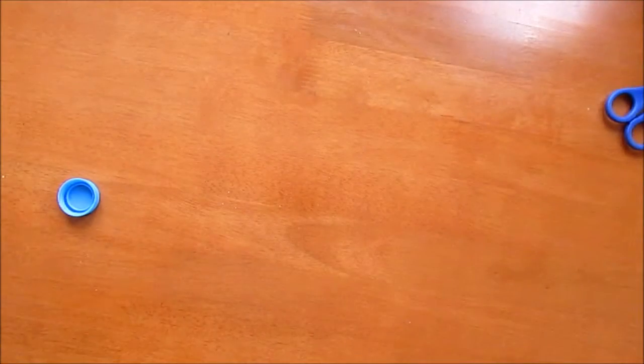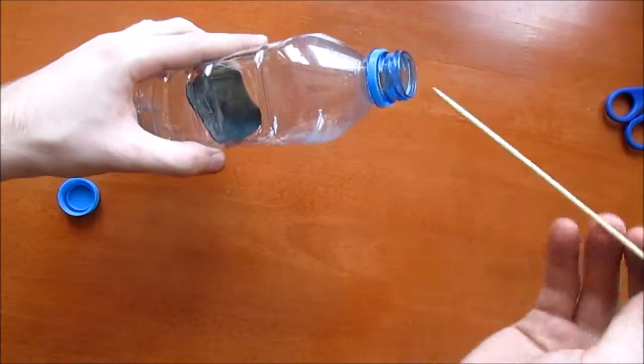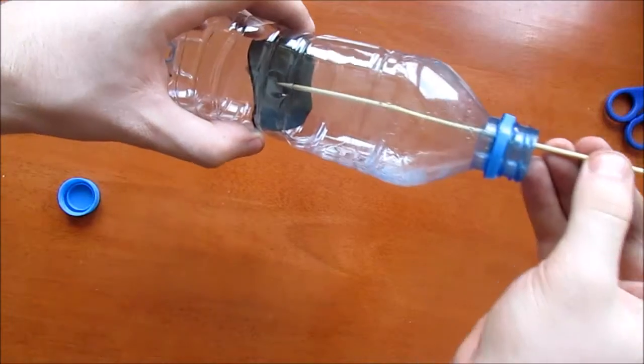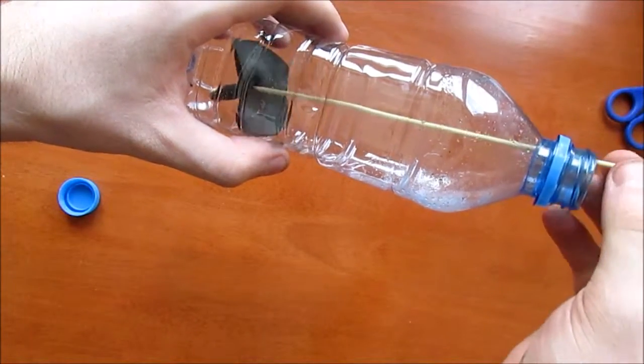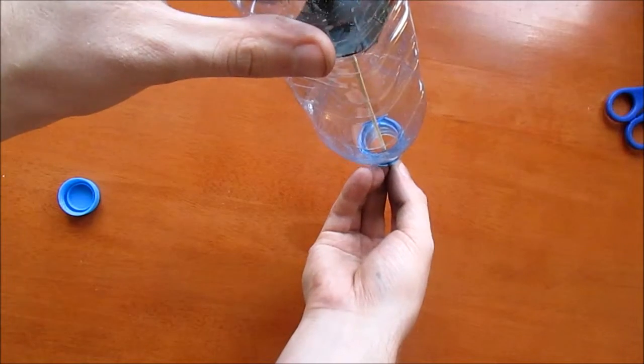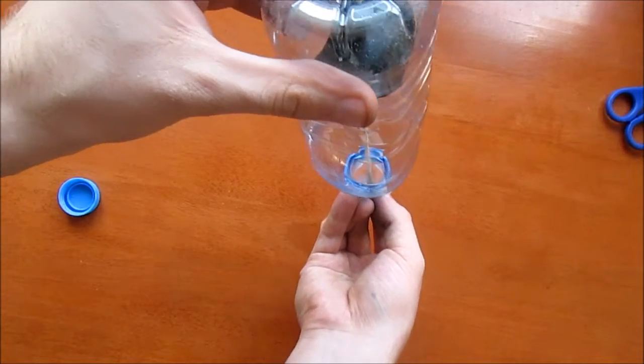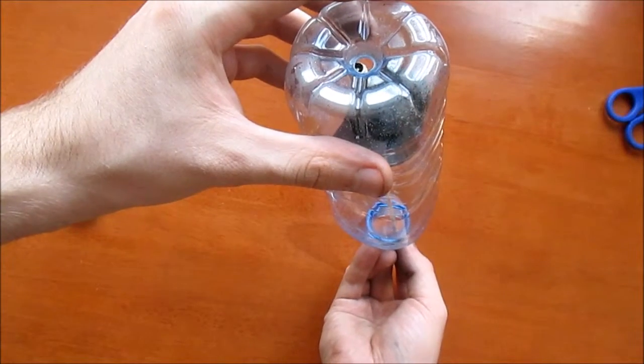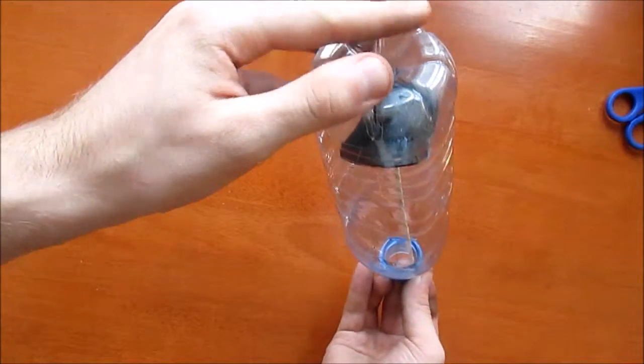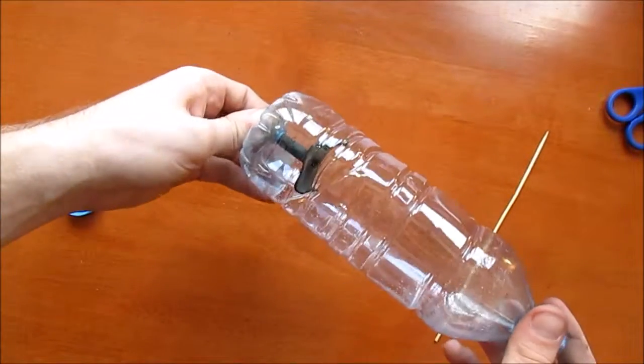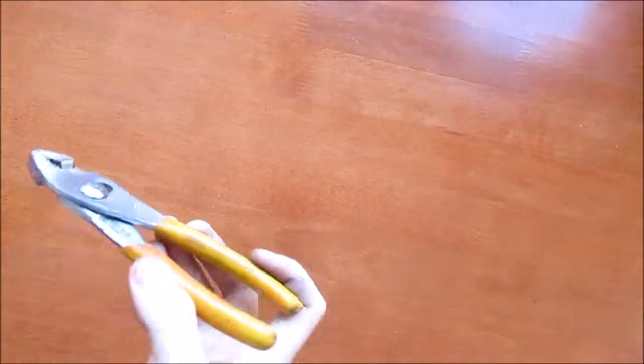Once you have gotten the valve down inside the bottle, the next thing you will need is a little stick. This will help you to align the valve with the hole on the bottom of the bottle. Put it in the little hole that is on the base of the valve and slowly work it around until you have it centered with the hole that you recently drilled. It should look something like this.